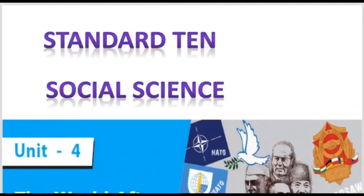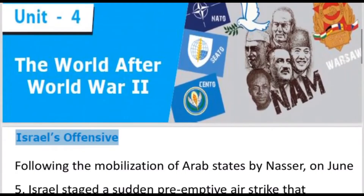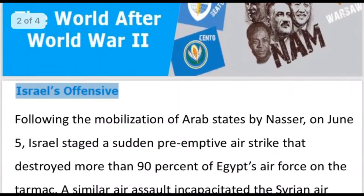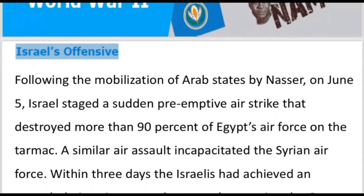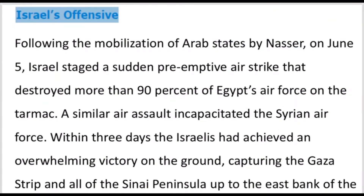Hello students. Standard 10 Social Science, Unit 4: The World After World War Second — Israel's offensive. Following the mobilization of Arab states by Nasser, on June 5th Israel staged a sudden preemptive airstrikes that destroyed more than 90 percent of Egypt's air force on the tarmac.